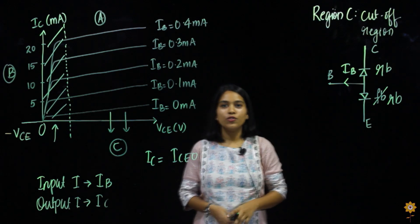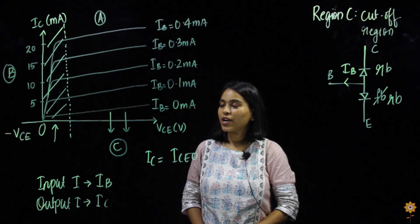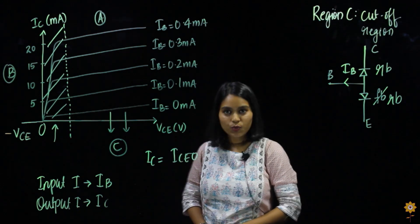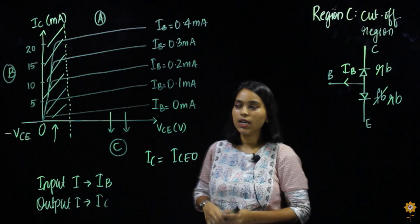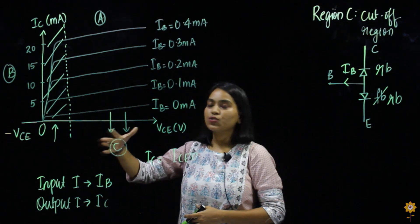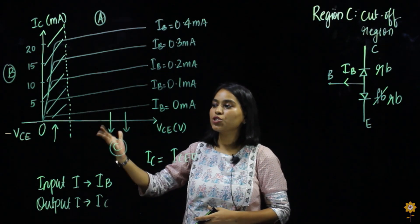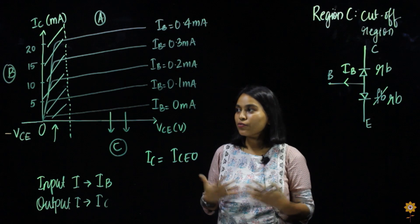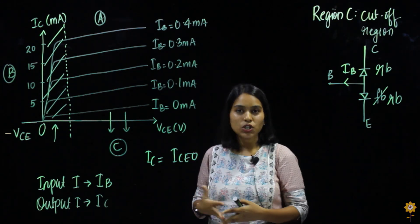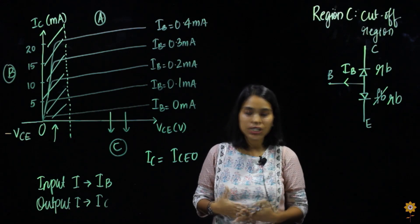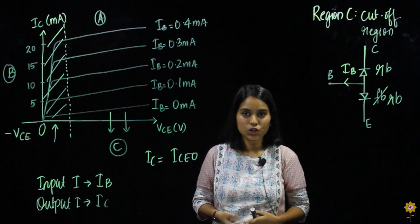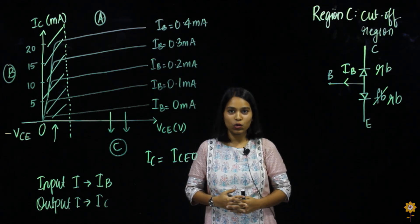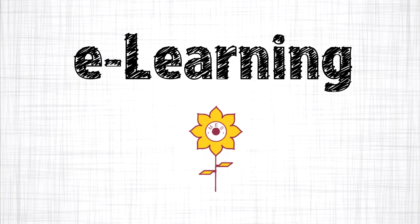So this is all for the output characteristics of the CE transistor. The output characteristic is output current versus output voltage, that is IC versus VCE. We divided the diagram into three regions: region A is the active region, region B is the saturation region, and region C is the cutoff region of operation. In the next video we will be seeing different kinds of biasing techniques. Thank you for watching.